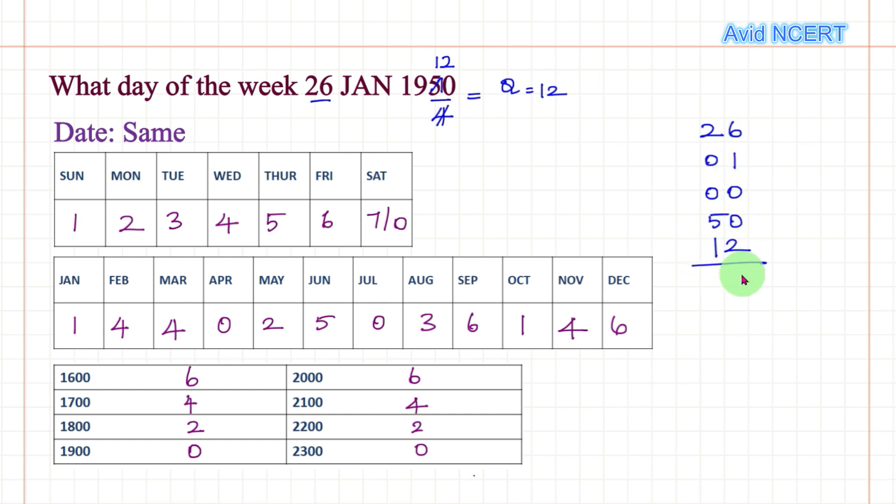So 26 + 0 + 1 + 0 + 50 + 12 = 89. Now divide this by 7. We divide by 7 because there are seven days a week.